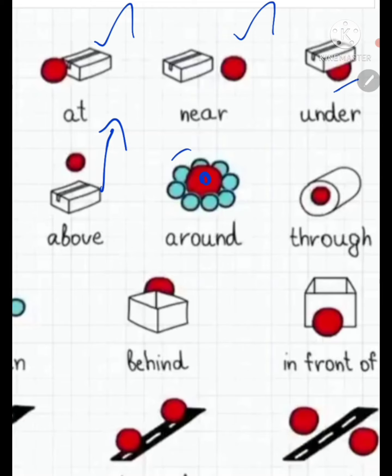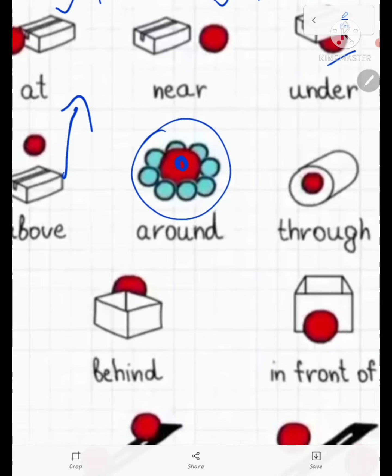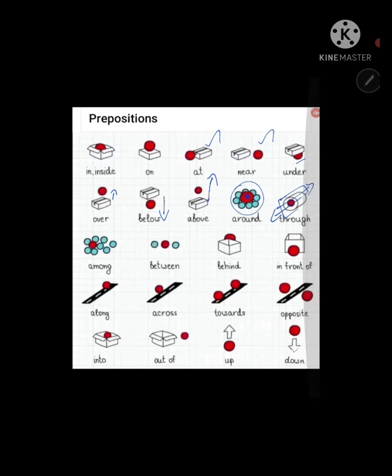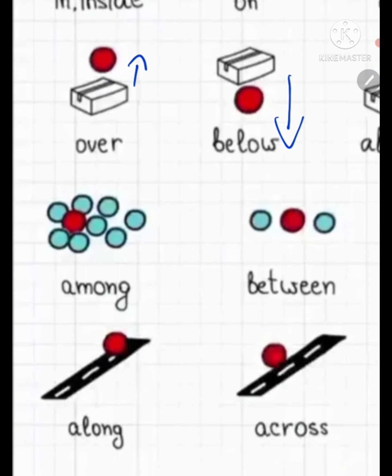Next, through. Through means what? This, if we take it as a tunnel, it refers to the movement, the position of movement. Next is among. What is among?